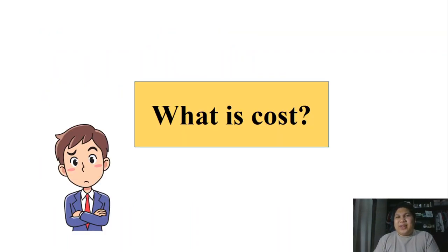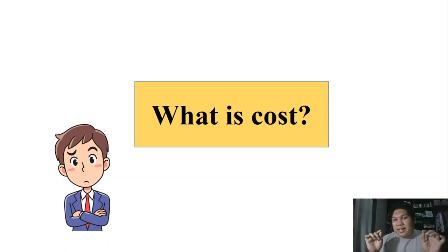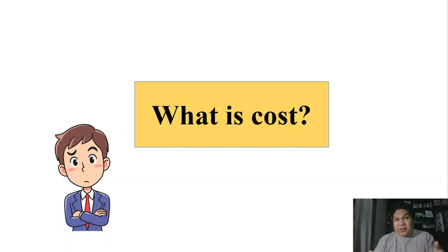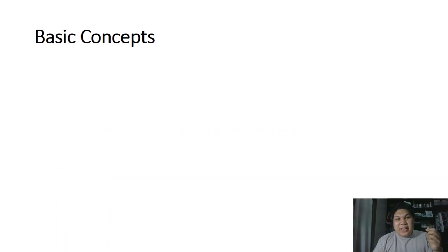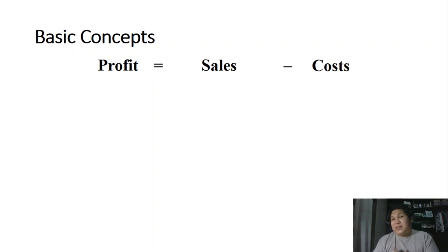You might be asking: what is a cost? This term is really familiar already. A cost means something you spend on. If you eat at a restaurant, that's a cost. If you buy something, that's a cost. In business, we have the concept that profit is always equal to sales minus costs. This is the very basic and simple formula on how to compute profit.